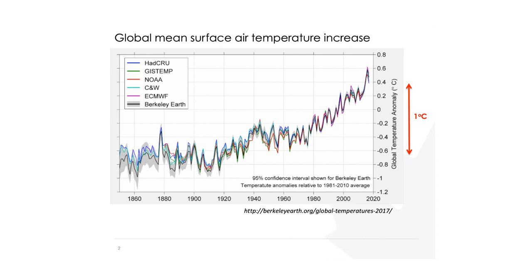I have two slides to set up the big picture before we zoom in on Canada. This figure, just released a couple weeks ago, is an updated version of a plot showing the global annual mean change in surface air temperature from five different observationally-based data sets, covering the period 1850 to the end of 2019. The different colored curves show results from these different observational data sets, and they agree with one another.